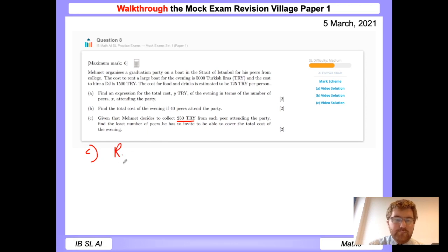So given that Mehmet decides to collect 250 Turkish lira from each peer attending the party, find the least number of peers he has to invite to be able to cover the total cost of the evening. So when you think, how much money is going to come in? So we want the revenue to roughly equal the costs. So we want to find at what stage does the revenue equal costs? So let's work out the revenue, how much money coming in. Well, that's going to be 250 multiplied by how many peers attend the party. And we know there are x attending the party. So we know the revenue will equal 250x.